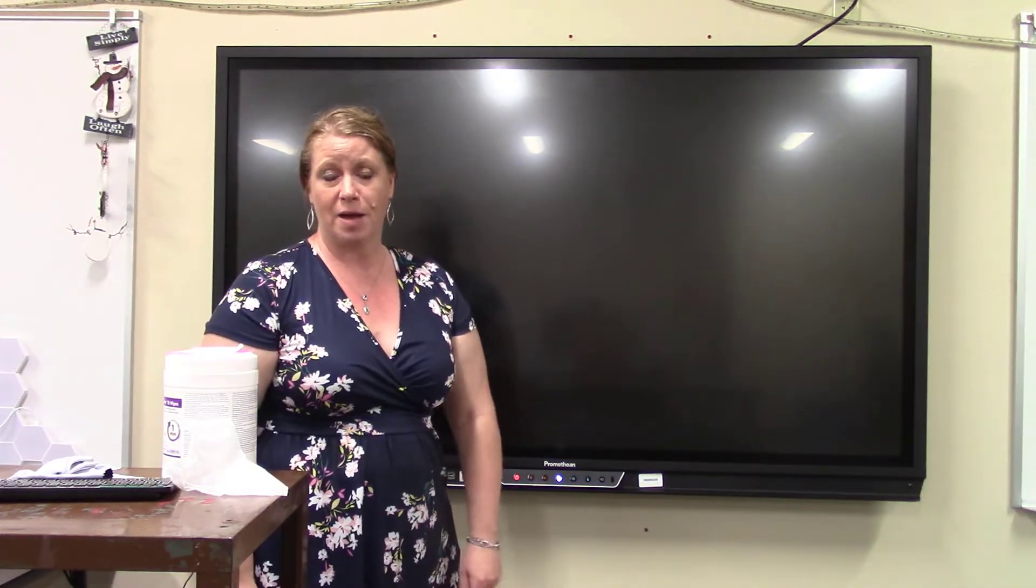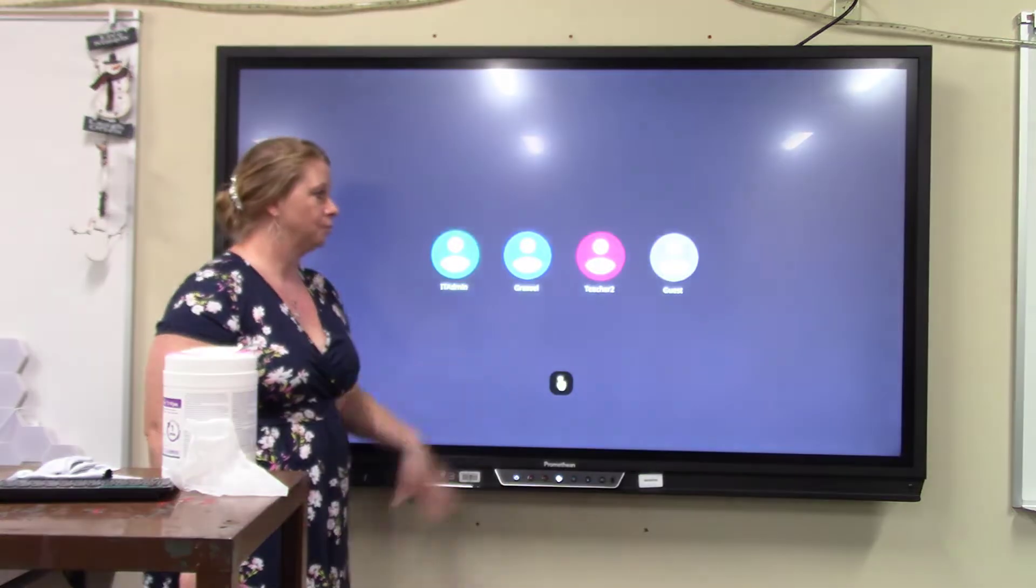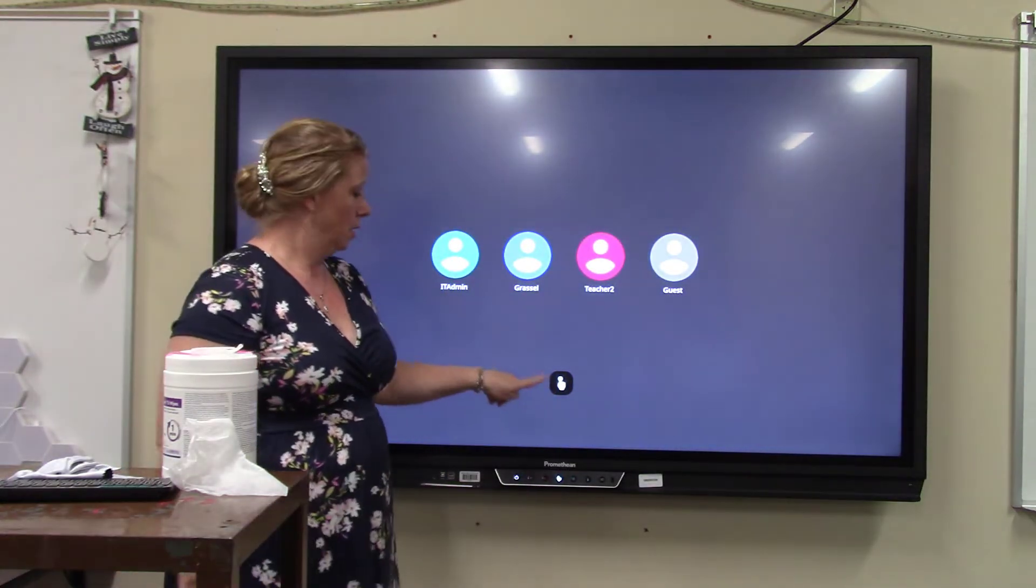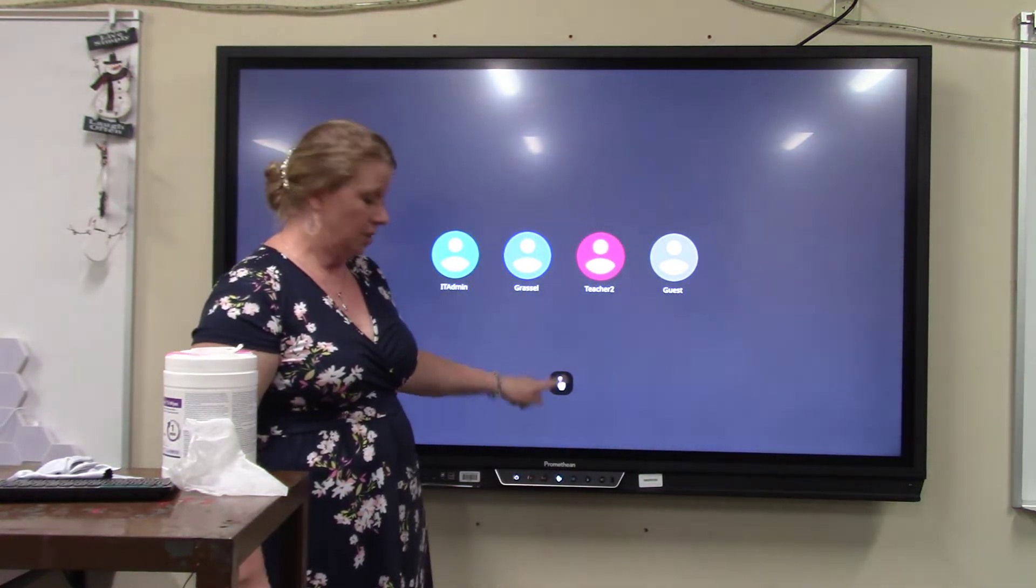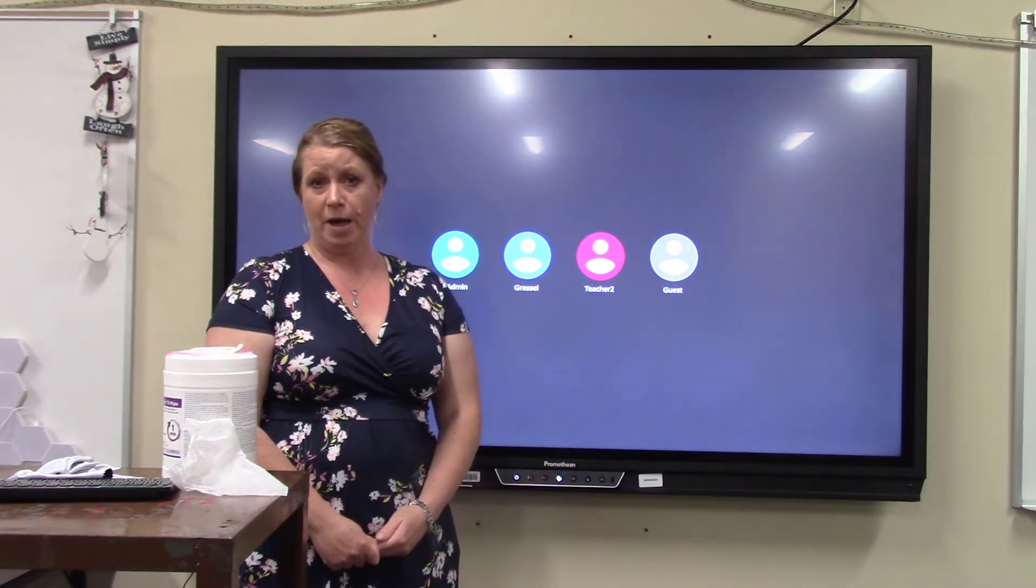Now how do we turn that touch back on? Great question. I'm going to tap that power button. My screen's going to be up. You can see my no-touch icon's still on, so I can go ahead and turn that off. Now my interactivity of my board is back.